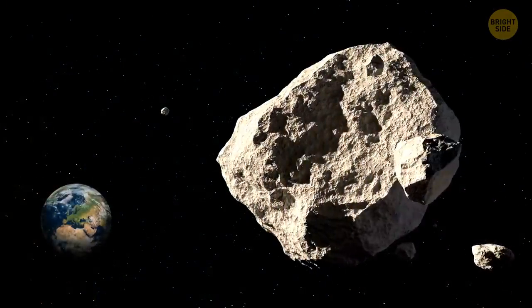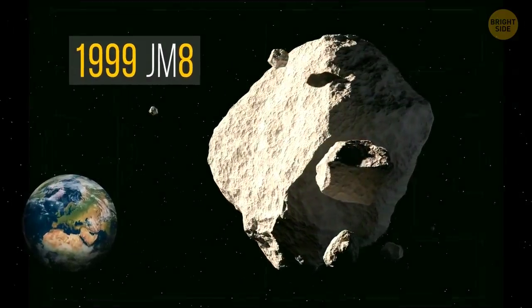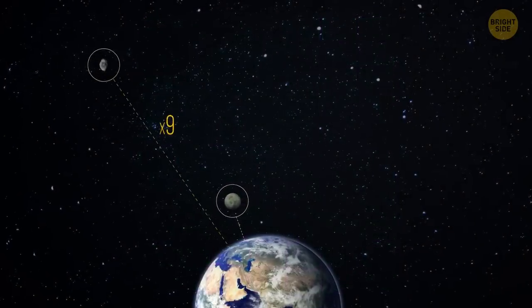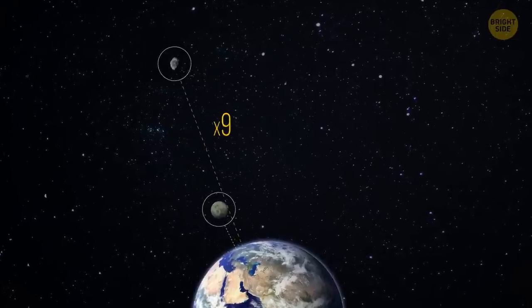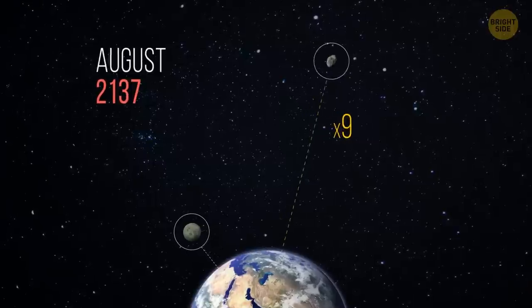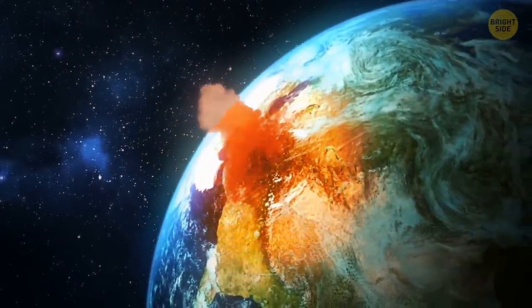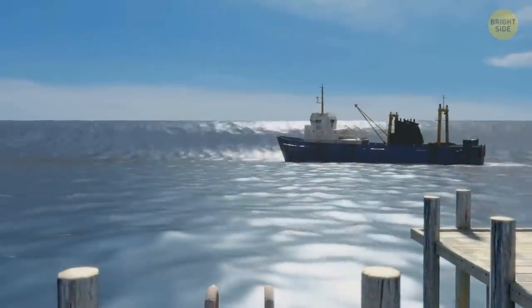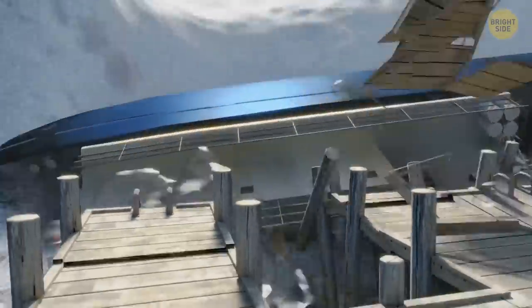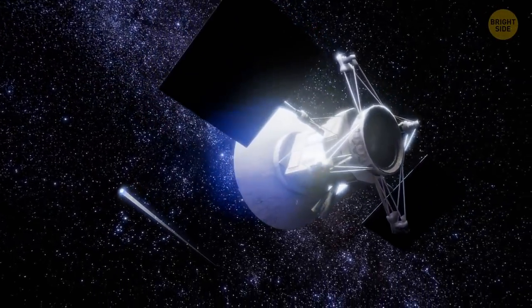But the largest, potentially hazardous asteroid is the 1999 JM8. It's about the size of 77 soccer fields. It passes by Earth at 9 lunar distances. Its closest approach to our planet will happen in August 2137. If such a meteorite were to hit Earth, an entire continent could be wiped out. The rest of the world would experience massive tsunamis, but would survive the event. So naturally, scientists are thinking of ways to protect the planet from such a disaster.